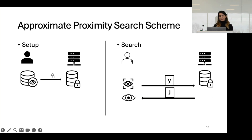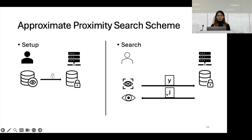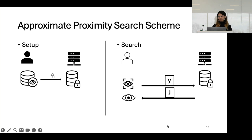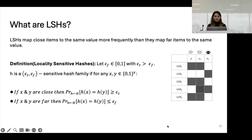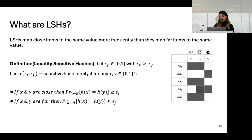During a search, a client is given a token and uses that token to generate their query and query the server with their intended biometric value. The server returns a result set. The proximity search scheme is correct if the result set contains the closest value to the query value y.